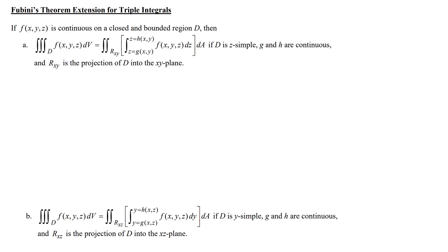If f of x, y, z — the function that we're going to be integrating — is continuous on a closed and bounded region D, then we have parts A, B, and C. The triple integral of the function over the region D equals an integral inside another integral, with the inner integral having dz.